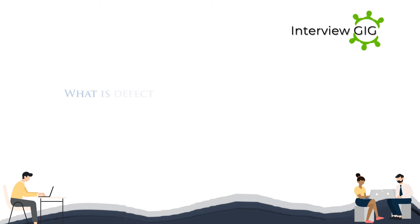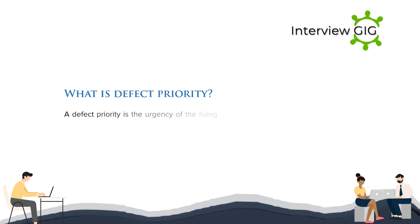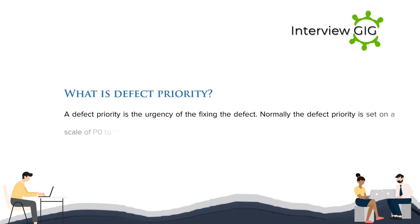What is defect priority? Defect priority is the urgency of fixing the defect. Defect priority is normally set on a scale of P0 to P3, with P0 having the most urgency to fix.